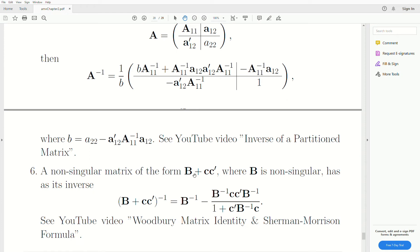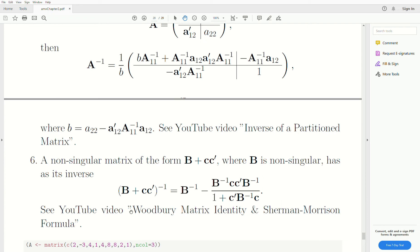And also if we have a non-singular matrix of the form B plus, and these are vectors, so it's the vector product. And the way that this does, it creates a matrix that can be added to B. B is non-singular. And then the inverse of this crazy matrix, B plus C, C transpose inverse, can be written in this formula right here. And again, we'll cover it in more detail at a later lecture. But if you want to have more on it now, I have a video called Woodbury Matrix Identity and the Sherman-Morrison Formula.